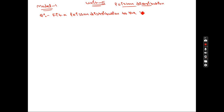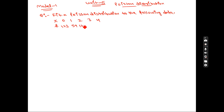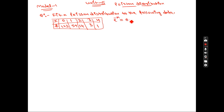The data is given with x values and frequencies. The x values are 0, 1, 2, 3, 4 and the corresponding frequencies are 123, 59, 14, 3, and 1. After reading the question, you need to understand: 0 times success, 1 time success, 2 times success, 3 times success, 4 times success. The total number of experiments is 200 — if you add all frequencies you get 200. Also, the value e to the power of minus 0.5 is given as 0.6065.